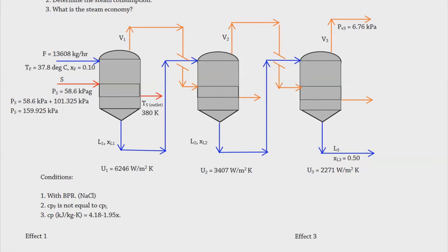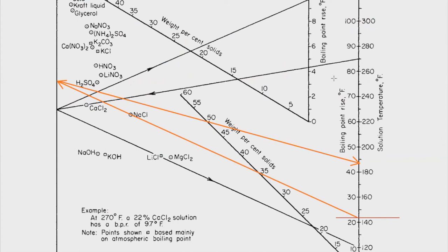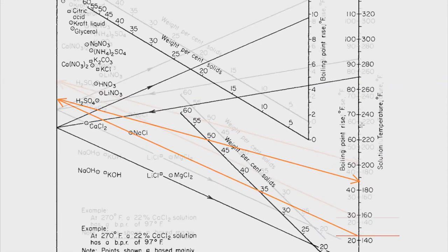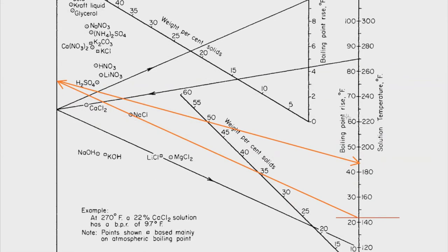The temperature only increases compared to the third effect. We know that our steam is given at around 380 K at the outlet. Converting to degrees Fahrenheit, that's around 225°F — so the steam temperature sits around there on our graph.